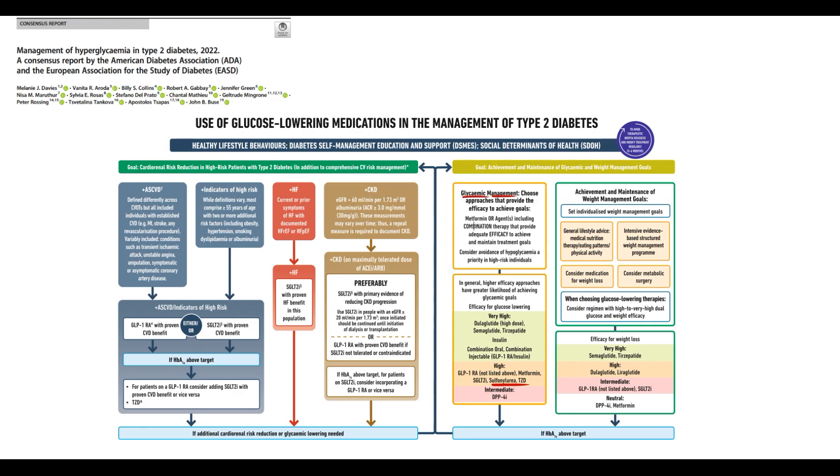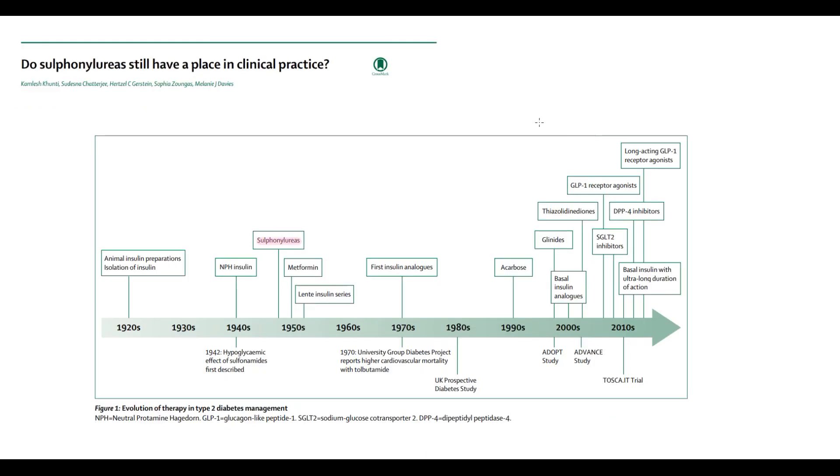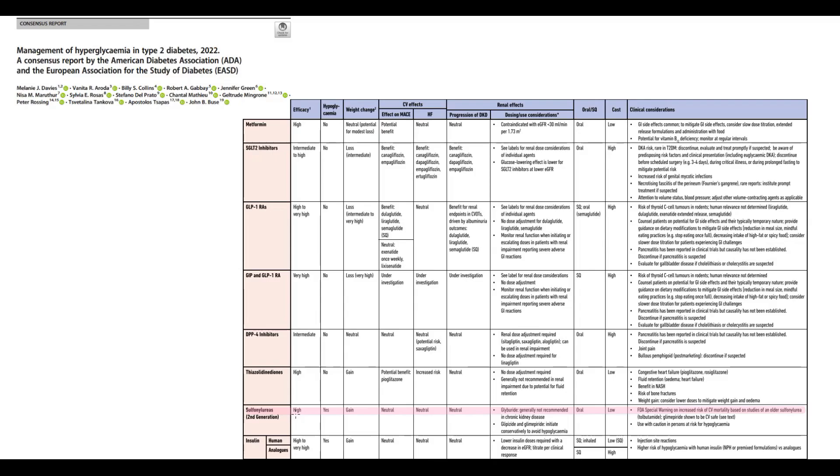So, sulfonylureas since 1950 are used in treatment of diabetes. But nowadays, we have more potent, more safe drugs, that are more efficient in controlling of blood glucose level. But still, in some cases, after so many years, we still use them.